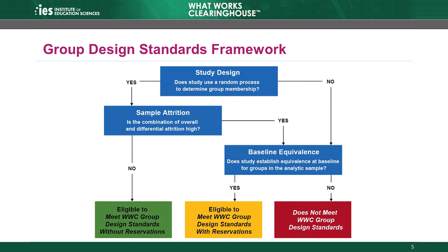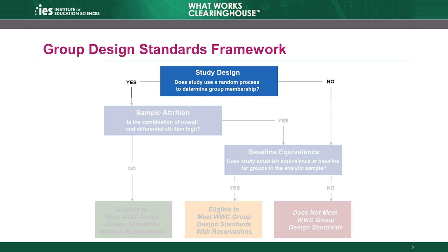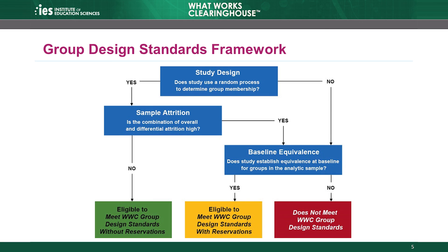The WWC group design standards evaluate studies using the framework illustrated here. This module discusses the first point in the framework — the question in the study design box — the design of the study and whether it used a valid randomization process to form the intervention and comparison groups. Only RCTs with valid randomization can receive the highest study rating. Next, in this module, we'll talk about what the WWC considers to be a valid random process. Later modules will discuss the other components included in this framework.